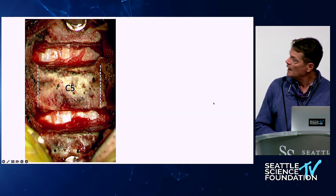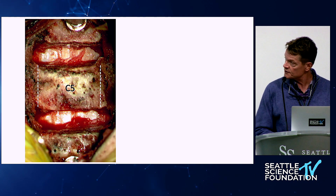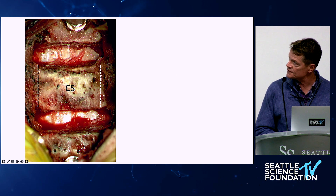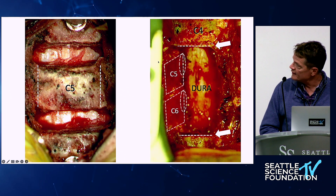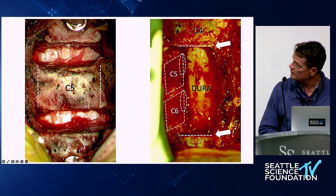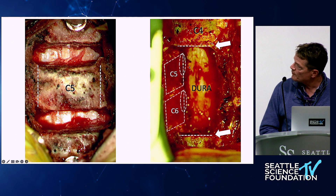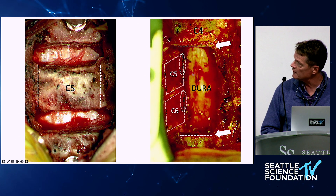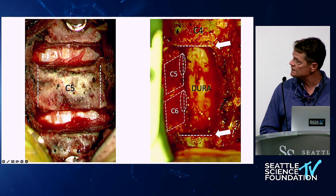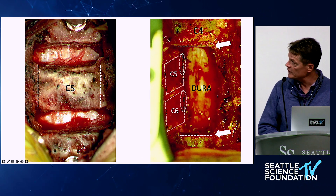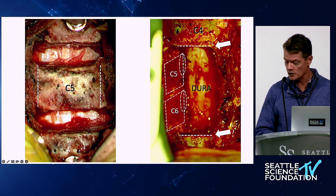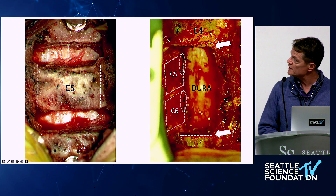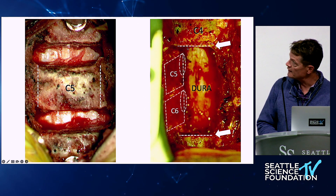The corpectomy always starts with discectomy, taking it out to the uncovertebral joints to gain access to the pedicles. The bony resection at C5 is dotted in at the lateral elements. A corpectomy is not a 15 mm undertaking — it's 18 to 22 mm pedicle to pedicle. Batson's plexus can bleed, especially in trauma, but TXA and gelfoam/glue manage that. Contouring the end plates perfectly horizontally without violating them reduces stress risers on the cage and limits subsidence.